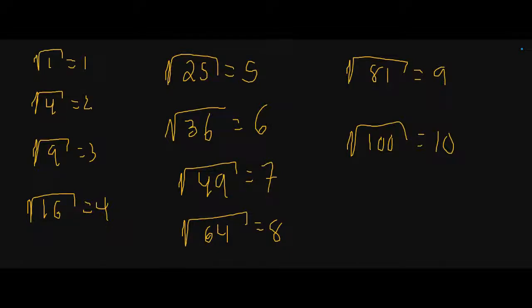For example, the square root of 1 is 1. Square root of 4 is 2 because 2 times 2 is 4. Square root of 9 is 3 because 3 times 3 is 9. And square root of 16 is 4 because 4 times 4 is 16.